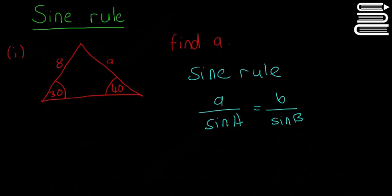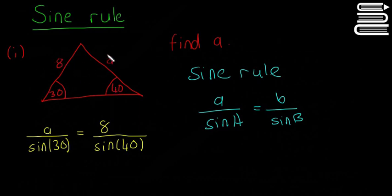So remember they have to be facing sides and angles. I'm going to say A over sine 30 is equal to 8 over sine 40. So remember it's always the side facing the angle, or opposite the angle, whichever one you want to call it. So 8 and 40, A and 30.